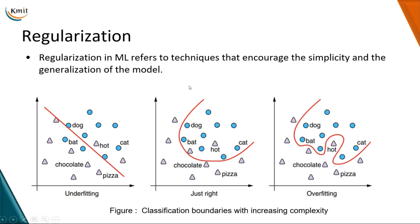What if the decision boundary does not have to be a straight line? Then you may draw something like the one shown in the second diagram. This one looks better — it makes fewer mistakes than the first one; chocolate and pizza are separated. It appears tractable for a machine learning model because the shape is simple. But there is nothing stopping you from making it even more complex.